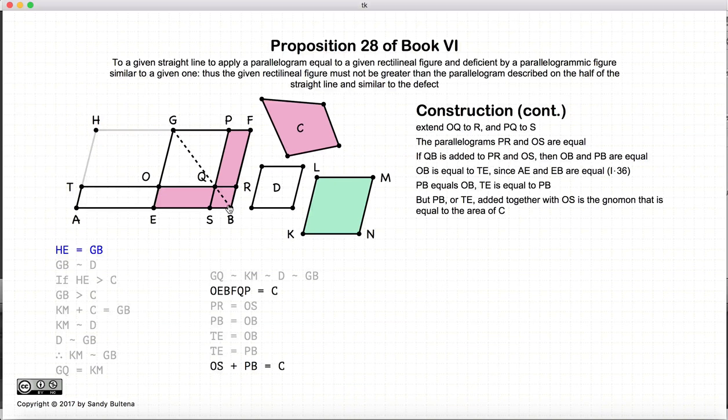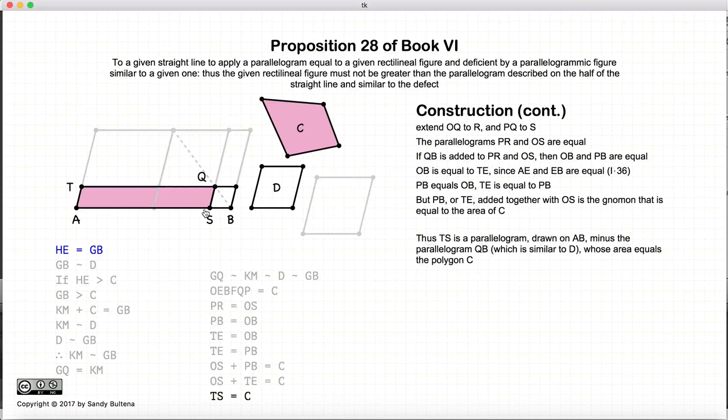Well, OS plus PB is equal to the gnomon, which is equal to C. So we have that OS plus PB is equal to C. But we had TE is equal to PB, and we had OS plus PB is equal to C. So if we just substitute TE, we have OS plus TE equals C. But OS plus TE is equal to TS. So we have that TS is equal to C.